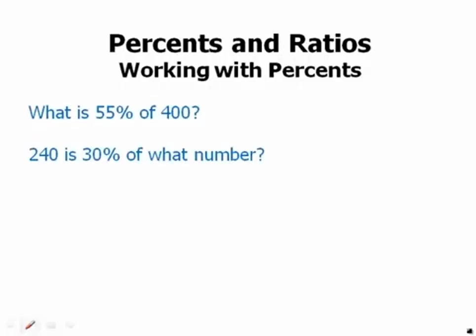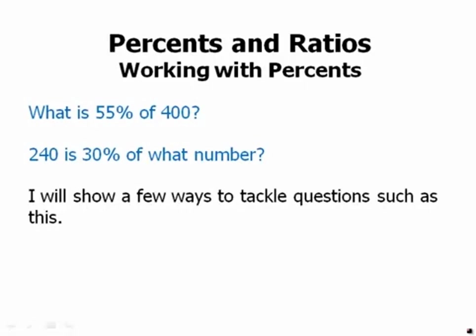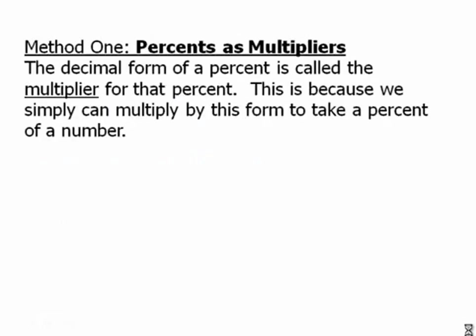Working with percents. What is fifty-five percent of four hundred? Or, two forty is thirty percent of what number? These could be test problems in and of themselves, or things you might have to do in the context of a larger problem. The first really big idea is percents as multipliers. The decimal form of a percent is called the multiplier for that percent, because we can simply multiply by this form to take a percent of a number.